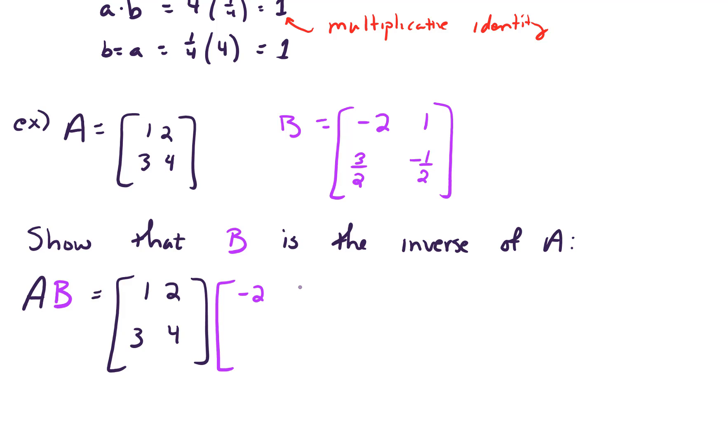And the other matrix, [-2, 1; 3/2, -1/2]. So multiplying through here, 1 times -2, which is -2, plus 2 times 3/2, which is 3, gives us 1. And multiplying 1 times 1, and adding that to 2 times -1/2, gives us 0. And indeed, we get the 2 by 2 identity matrix.